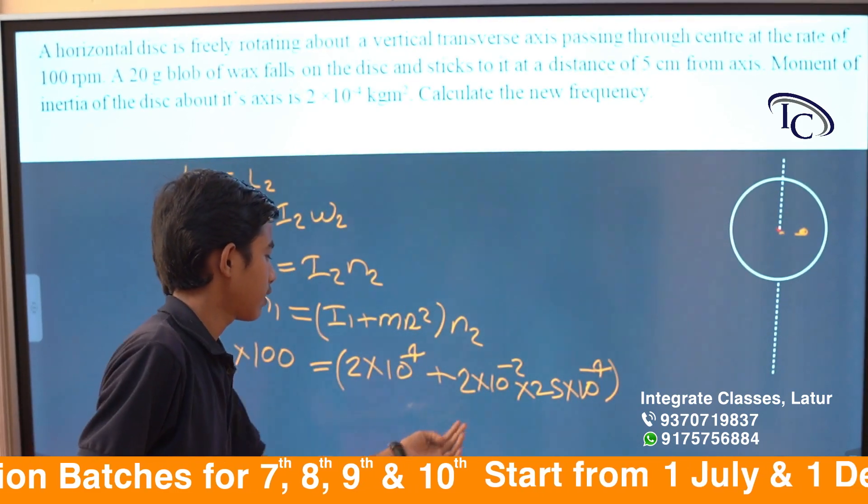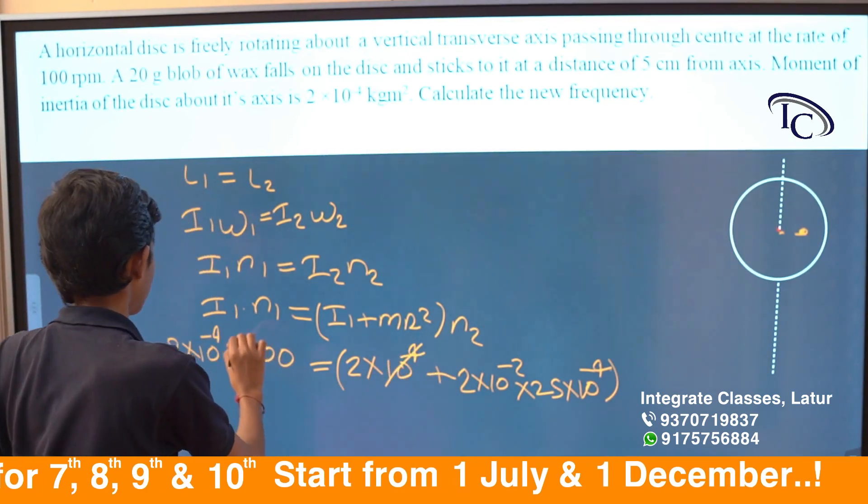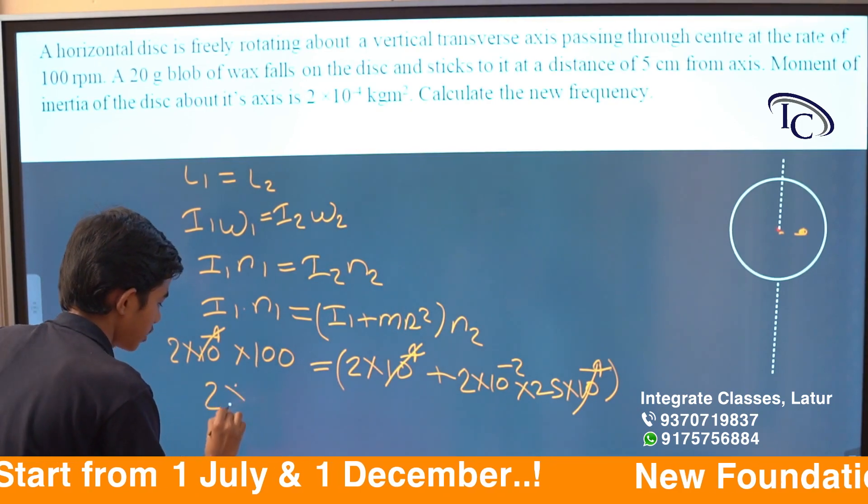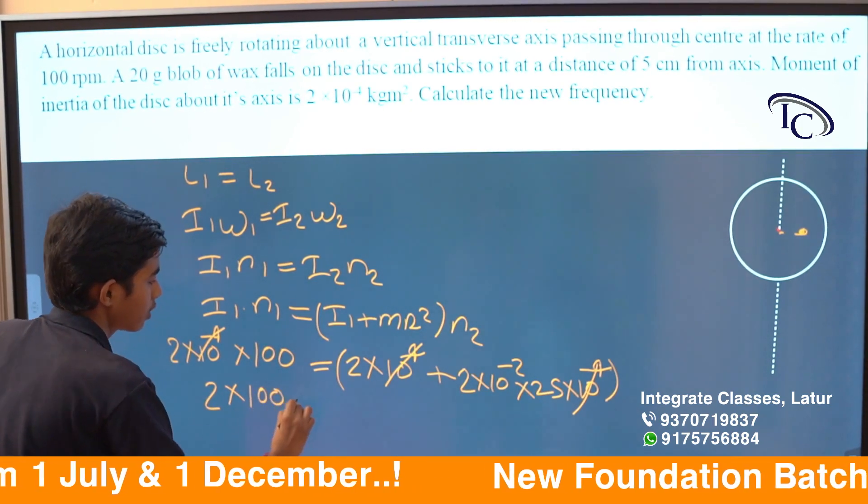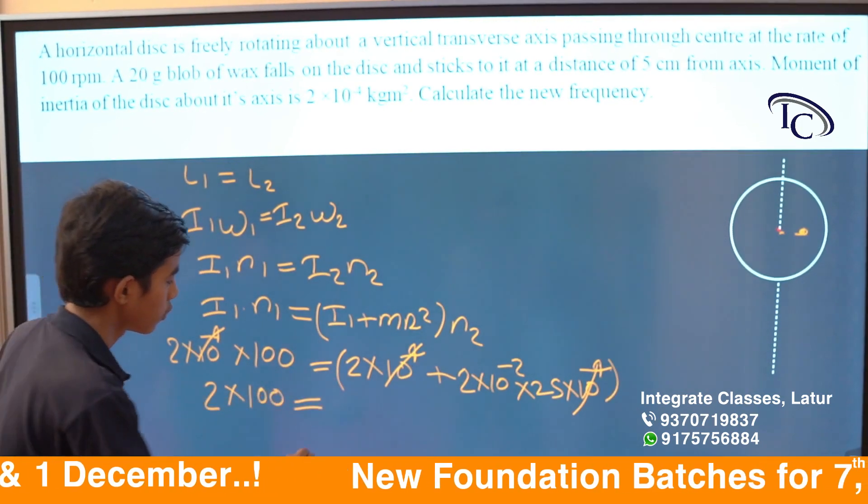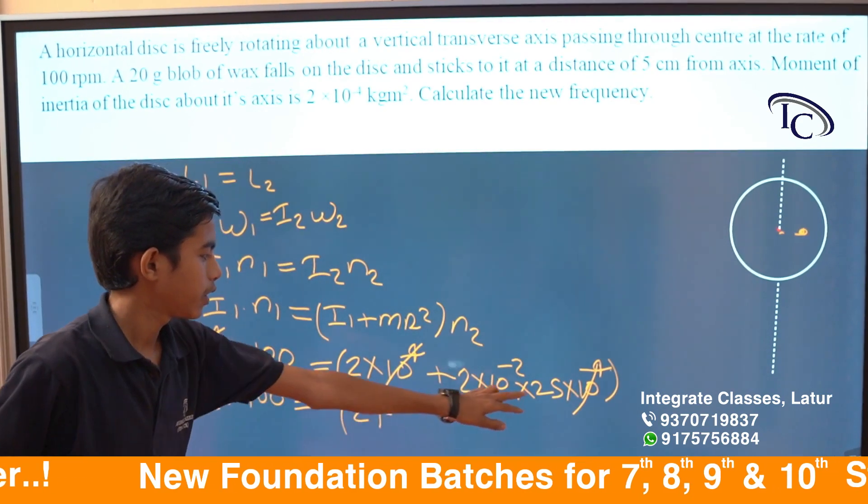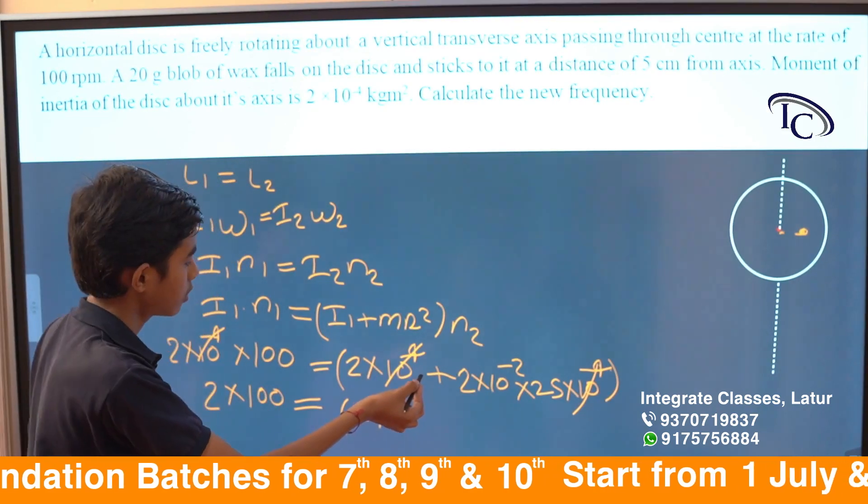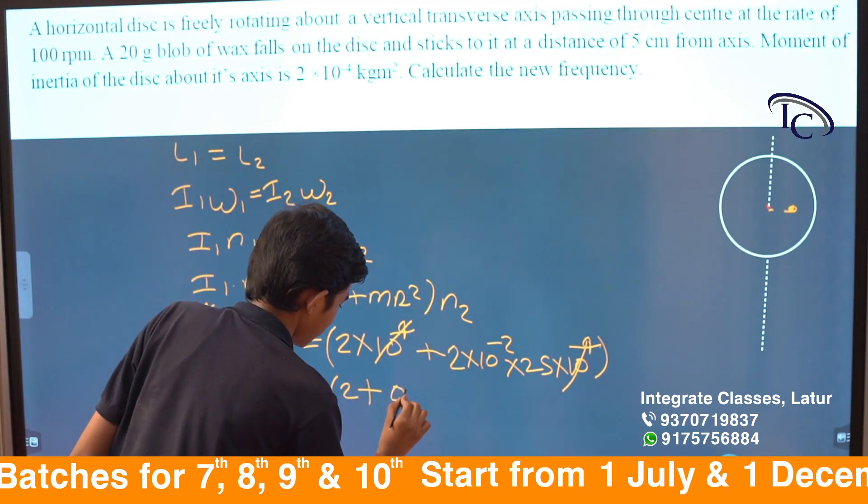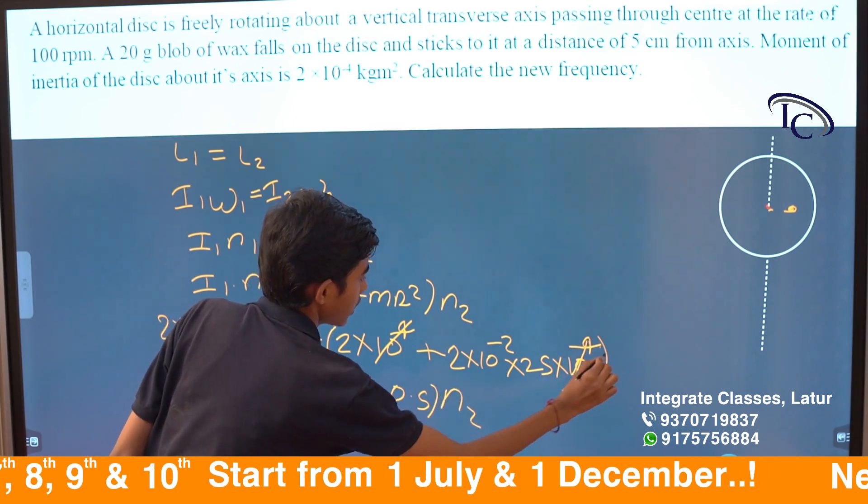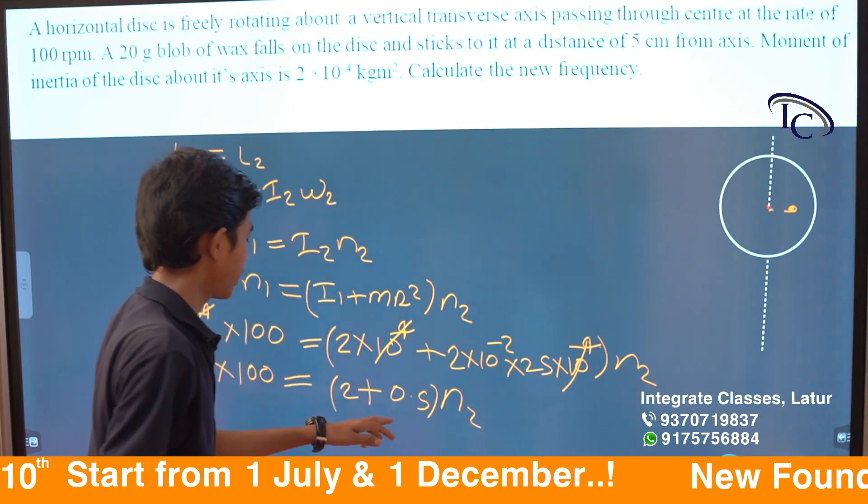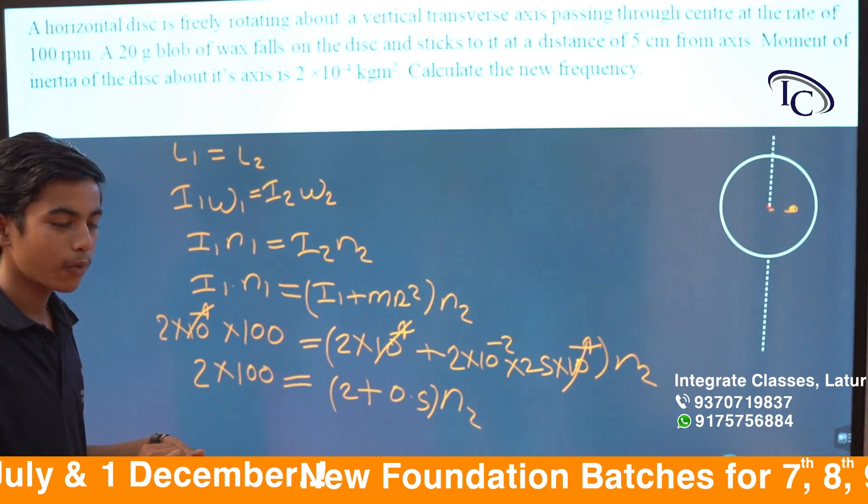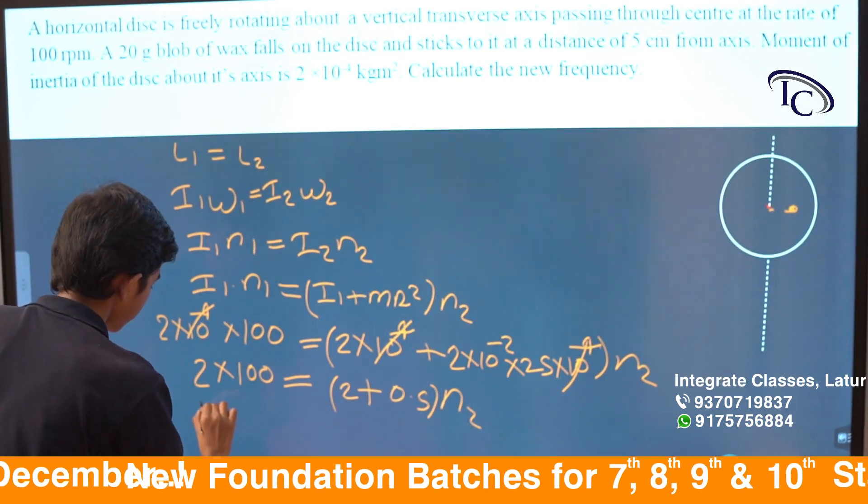2×10^-4. 2×100 equals 2×25 plus 50×10^-2, which is 0.5 into n2. 2×0.5 is 2.5.